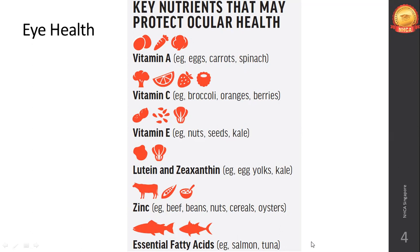Vitamin C is an antioxidant that supports eye tissues from free radical damage. Vitamin E, again an antioxidant, can protect eyes from environmental damage. Omega-3 fatty acid can support eye health by preventing plaque buildup within the eye and reducing inflammation. If vitamin A is not adequately found in your diet, supplementation with beta-carotene, vitamin E, C, zinc, and copper can be taken — a multivitamin supplement — which can also reduce your risk of macular degeneration.